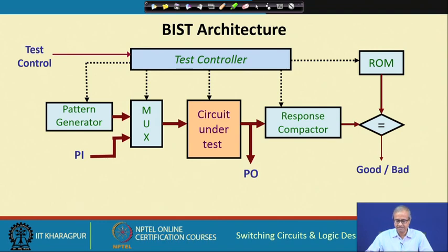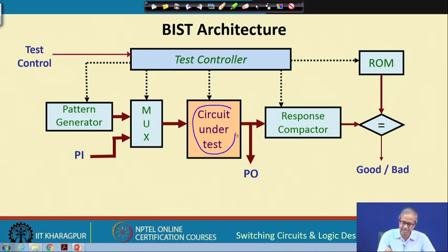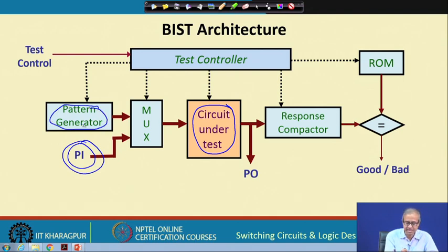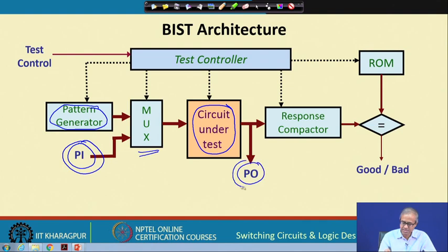Here is a more detailed schematic for the BIST scheme or BIST architecture. In the center you have the circuit that you want to test — the circuit under test. Normally the circuit will take its input from some primary input lines (PI), coming from outside. But while in test mode, there will be some kind of pattern generator inside the chip, and the input to the circuit will come from the pattern generator. A multiplexer will be selecting either the PI or the pattern generator outputs to be fed to the circuit. Similarly, on the output side, a response compactor circuit will be compressing the output to a small signature.